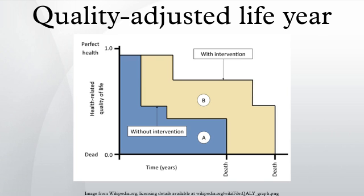Or killing them. Visual Analog Scale: respondents are asked to rate a state of ill health on a scale from 0 to 100, with 0 representing being dead and 100 representing perfect health. This method has the advantage of being the easiest to ask, but is the most subjective.